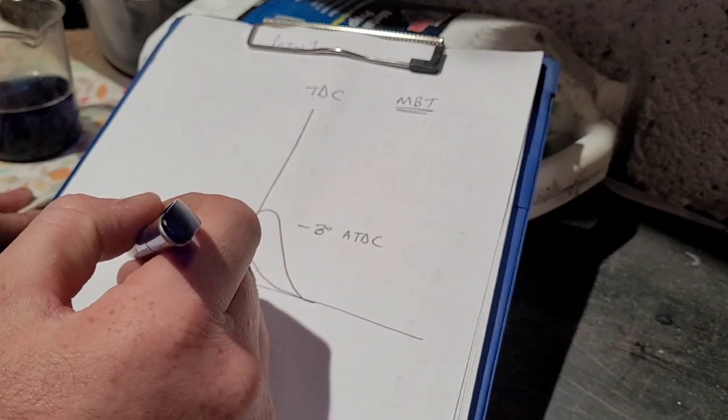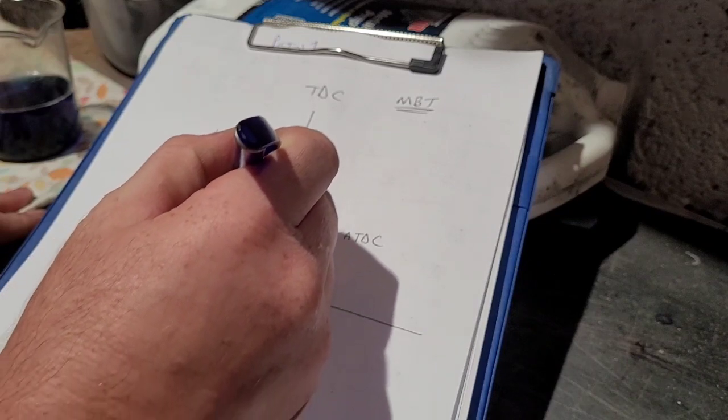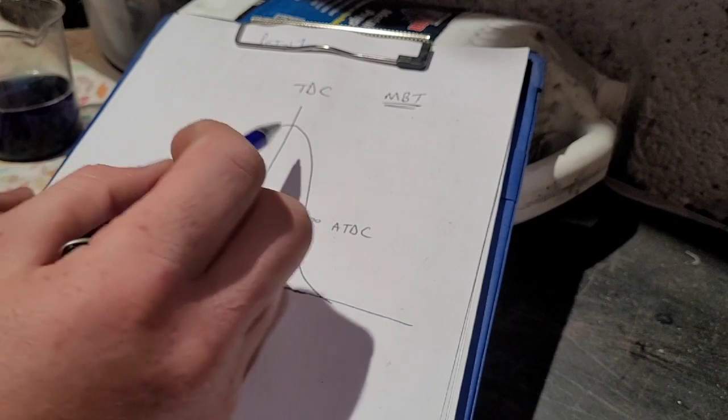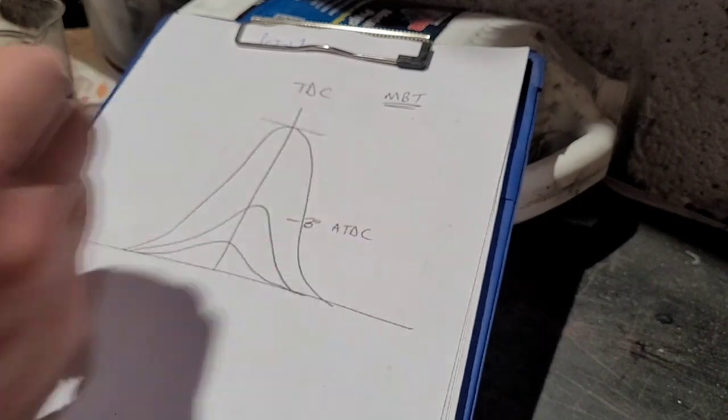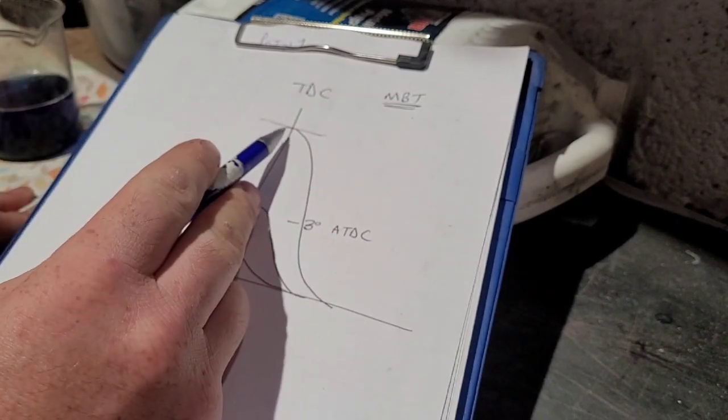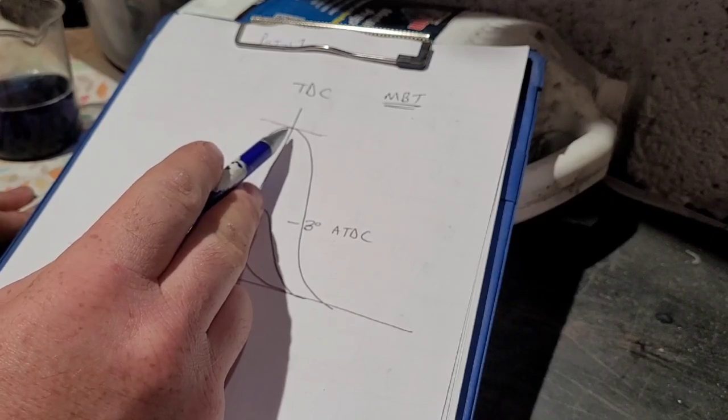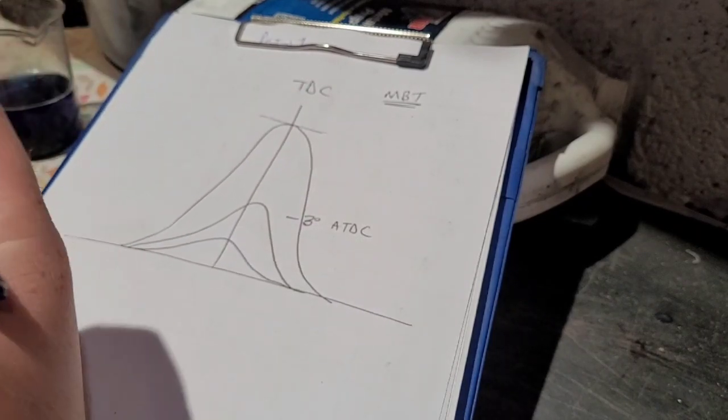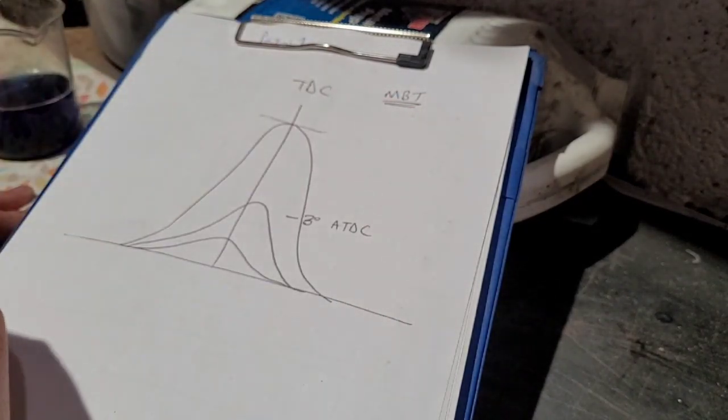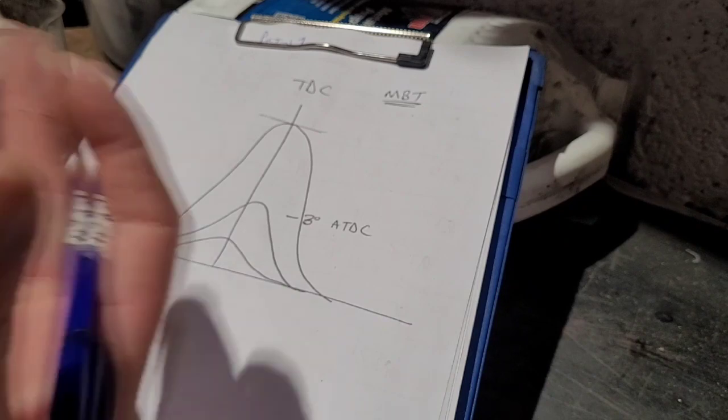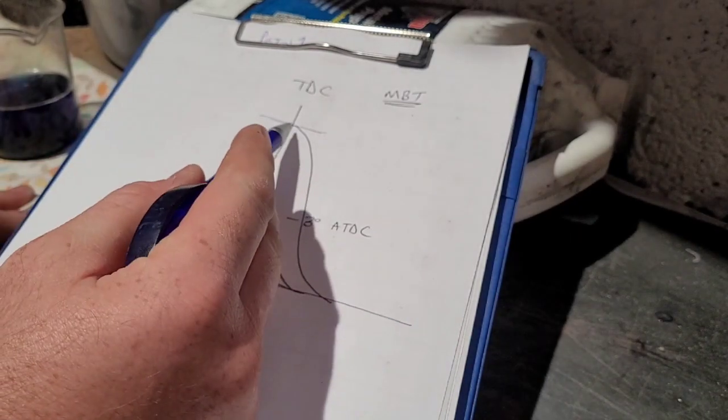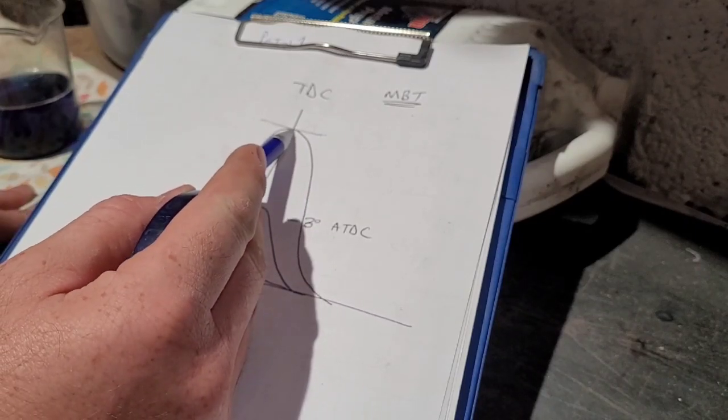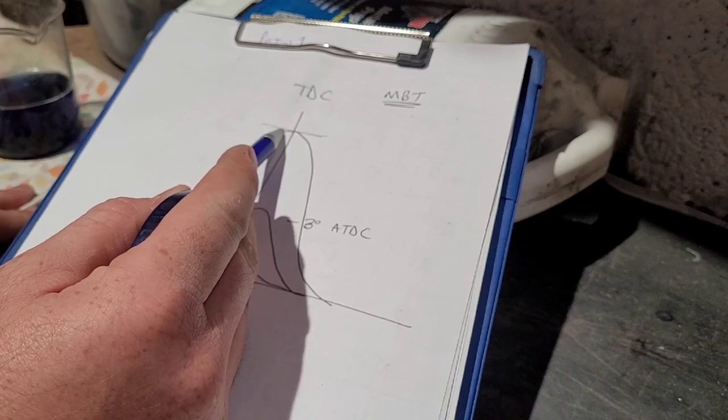So what we want is ideally something like that. So that line across there, that is where we're achieving our peak cylinder pressure, which in turn gives us the maximum brake torque - the maximum you're going to achieve from that cylinder. You're not going to get any more than that.